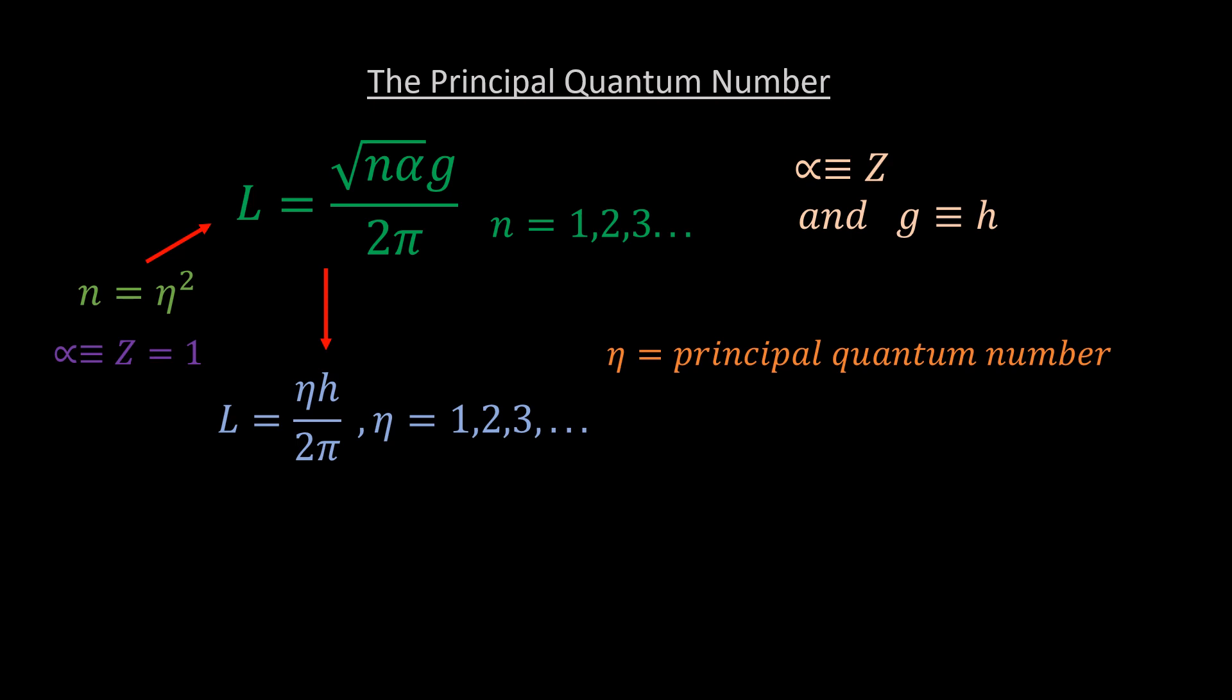Every value of eta corresponds to some value of n according to their relationship. So the corresponding n values for these three values of eta represented n subscript eta are as follows: when eta is 1, n is equal to 1 squared which is 1. When eta is 2, n is equal to 2 squared which is 4 and so on. So you can see that every value of momentum you can calculate using the Bohr equation can also be gotten using the Green equation, making the Bohr equation a subset of the Green equation.